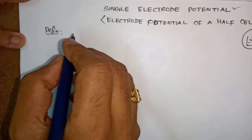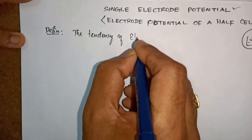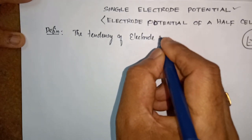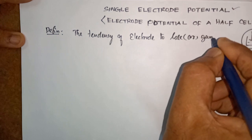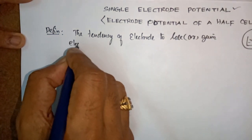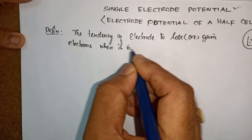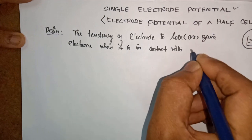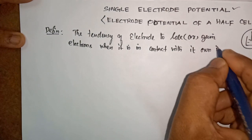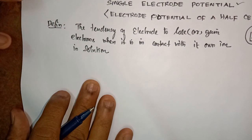What is the definition for single electrode potential? The tendency of an electrode to lose or gain electrons when it is in contact with its own ion in solution is called single electrode potential.